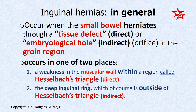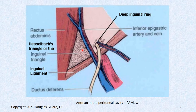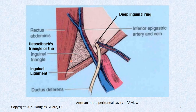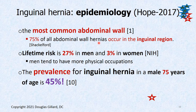Small bowel either gets sucked through that embryological hole or through a tissue weakening specifically in Hesselbach's triangle. From a posterior-to-anterior view inside the abdominal cavity looking out, you'd see the rectus abdominis, the linea semilunaris forming the medial wall of the inguinal triangle, the inguinal ligament forming the inferior part, and the inferior epigastric vessels forming the lateral-superior wall. This is where direct inguinal hernias occur. Indirect inguinal hernias occur through the deep inguinal ring.